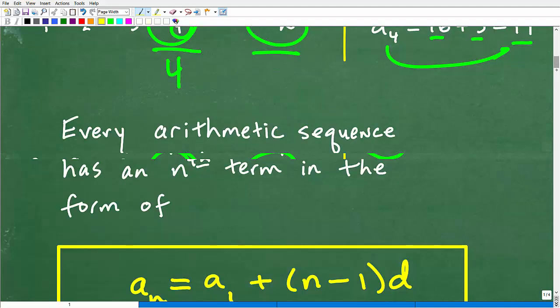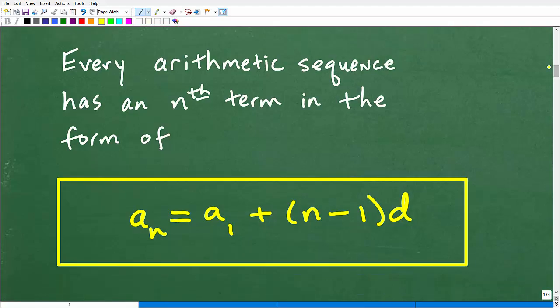Okay, so how do we figure this formula out? Well, this is not that difficult. So here is a quick little lesson on arithmetic sequences. So every arithmetic sequence has an nth term in the form of this.